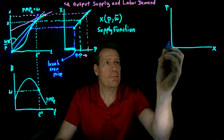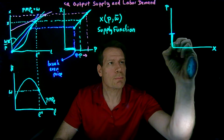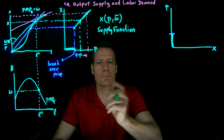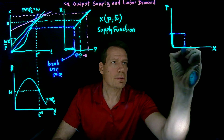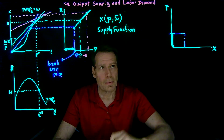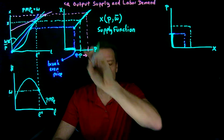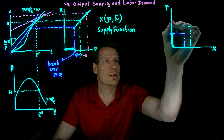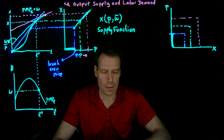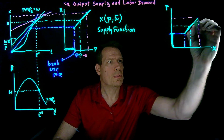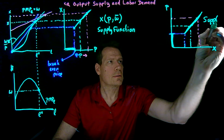So what happens is that we have a break-even price. We know below that break-even price we're going to produce zero — so that's this part when we invert it. At the break-even price, we'll start producing the blue quantity. As the price rises to the green price, we'll produce the green quantity from over here. And as it increases to the magenta price, we'll produce the magenta quantity from over here. So we can then trace out the supply curve and get output supply.